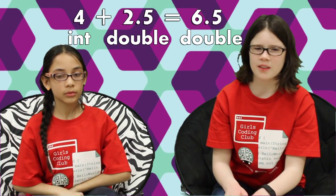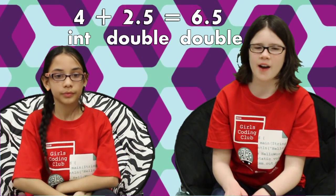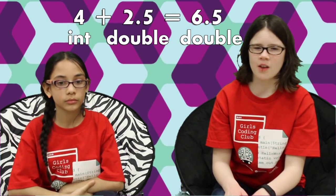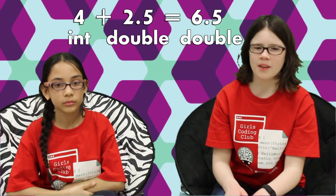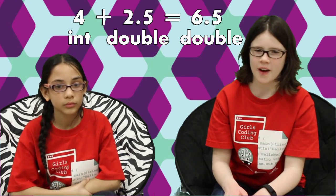But what if the variables aren't the same type? Sometimes it will still work. For instance, if you add the integer 4 to the double 2.5, the result will be the double 6.5.